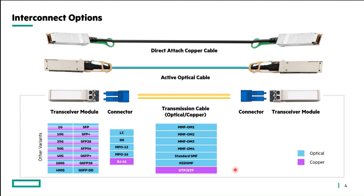All three elements can be of multiple types. For instance, your transceiver module can be SFP, subjected to 1GB; SFP+; SFP28; and so on. Your connector might be LC, SN, MPO12, MPO16, and others. Your transmission cable can be of MMF type, SMF type, or other types.